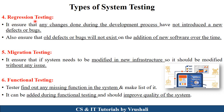The next type is regression testing. As discussed earlier, sometimes customer requirements continuously change during a project. Here, the tester ensures that any changes made during the development process have not introduced any new defects, bugs, or errors. They also ensure that old defects and bugs do not reappear when new features or requirements are added. This is called regression testing.